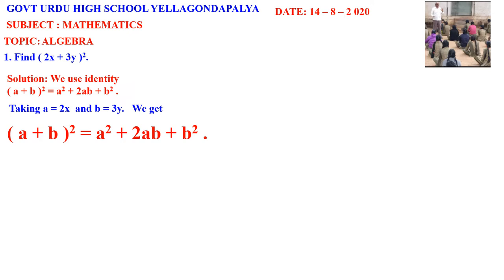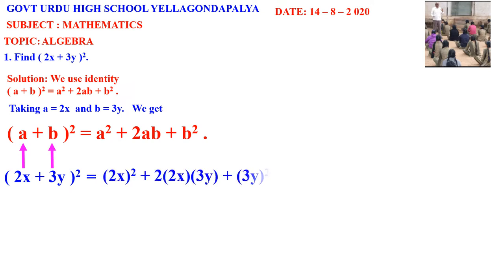So, let us write the formula: a plus b whole square is equal to a square plus 2ab plus b square. So, 2x plus 3y whole square — a means 2x, b means 3y. In place of a, we write 2x whole square; in place of 2ab, we write 2 into 2x into 3y; and in place of b square, we write 3y whole square.